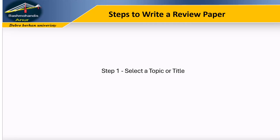Steps to write a review paper. Step 1: Select a topic or title. Start with a broad area of interest. To narrow it down, read existing review papers in your field. Notice what has been covered and identify gaps. Sometimes you may find that combining insights from different papers can create a unique perspective.